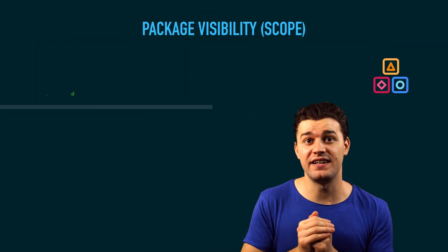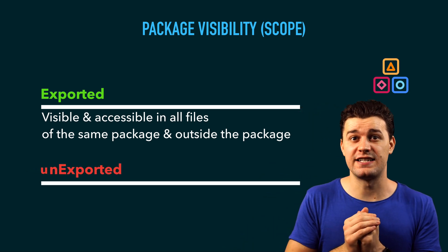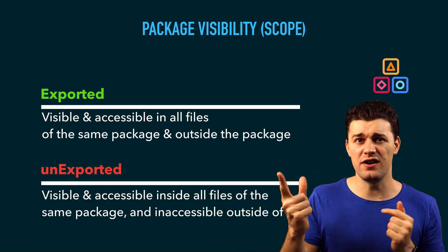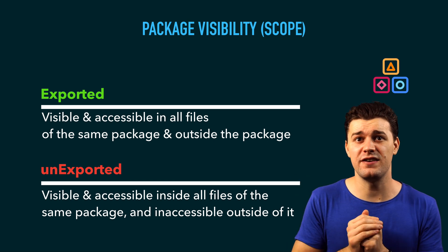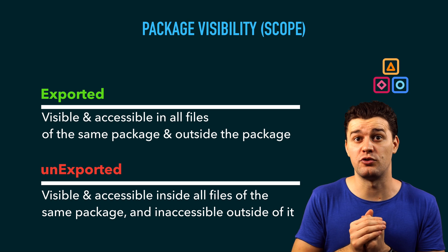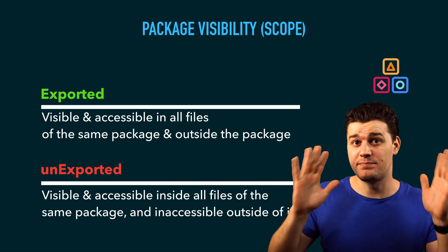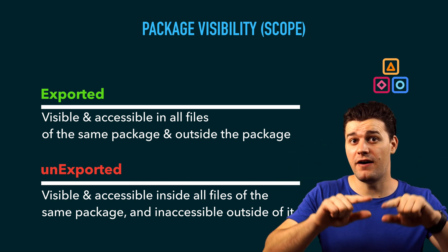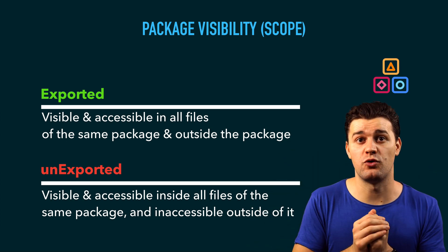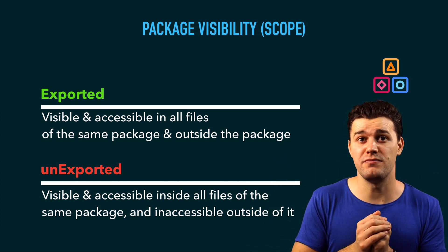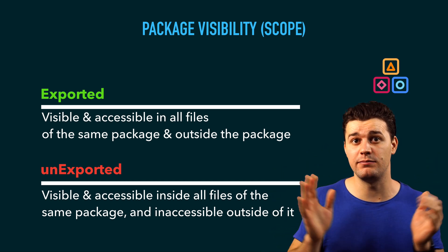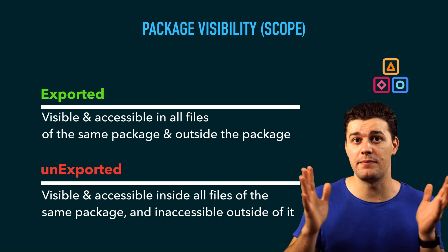Speaking of package visibility and scope: exported means anything that starts with an uppercase letter — constants, types, functions. Exported symbols are visible inside every file of the same package and visible outside that package. Unexported, or private in other languages, means visible inside every file of the same package but not accessible outside of that package.